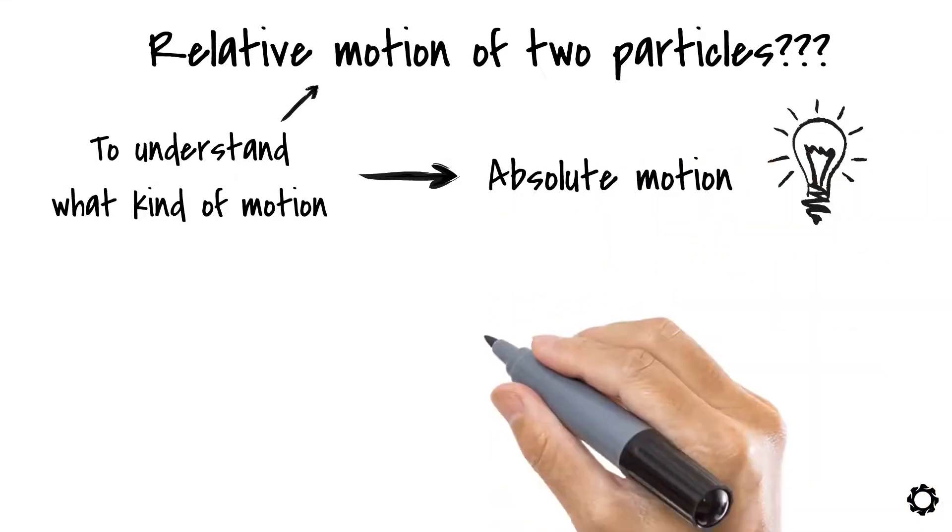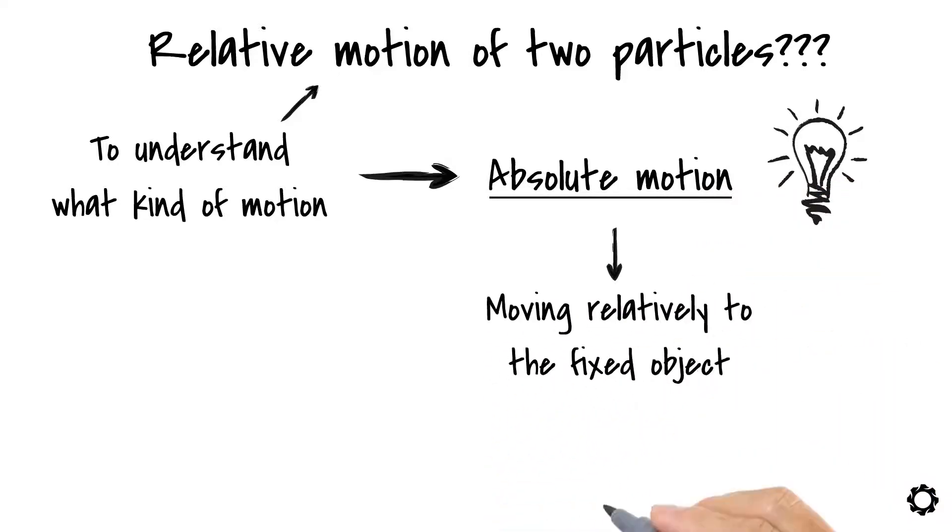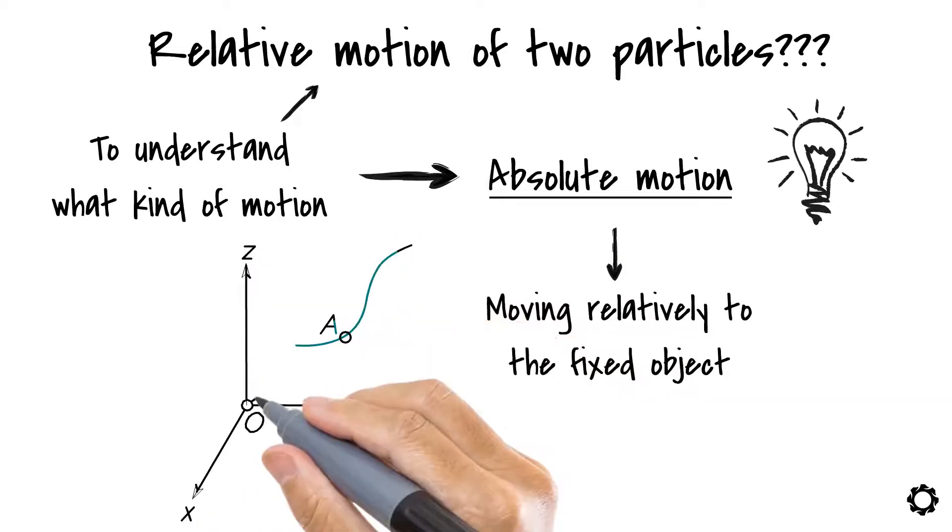We can say that a particle is in absolute motion if it's moving relative to a fixed object. Therefore, to describe the motion of a particle in this kind of motion, we use a fixed XYZ reference frame.